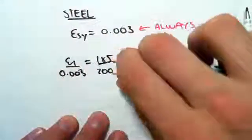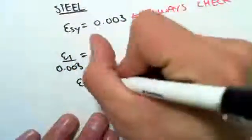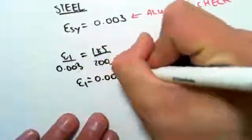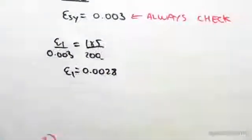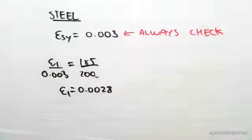If you were to solve this for E1, you would find you would have a strain of 0.0028. Now what you always have to do is check it against the yield strain. So we found the yield strain in the previous video.